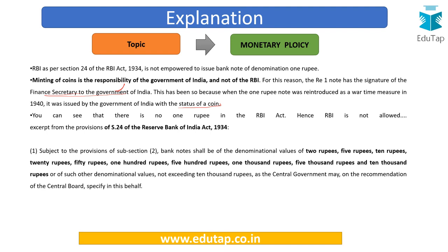You can refer to Section 24 of the RBI Act 1934 — this is a very important section number that can be asked in exams. It talks about denominations of 2 rupees, 5 rupees, 10 rupees and so on, but does not mention the denomination of 1 rupee. Therefore, RBI is not responsible for issuing the 1 rupee note; the Government of India through the Finance Ministry is responsible for it.